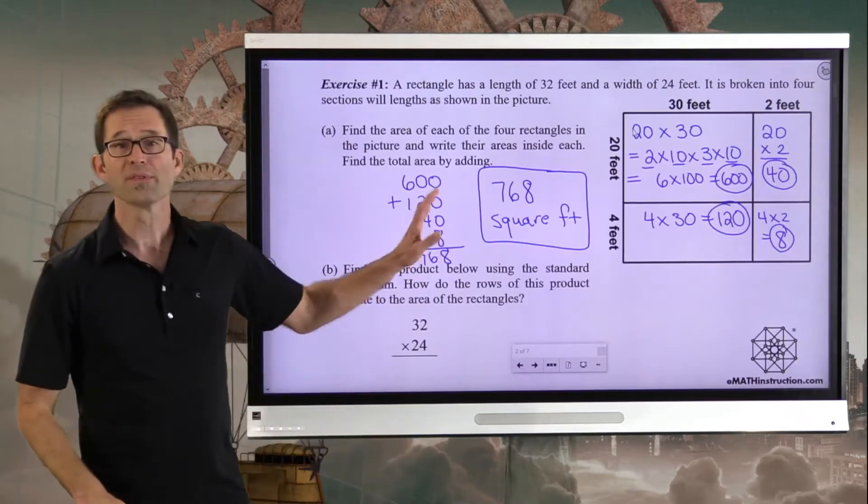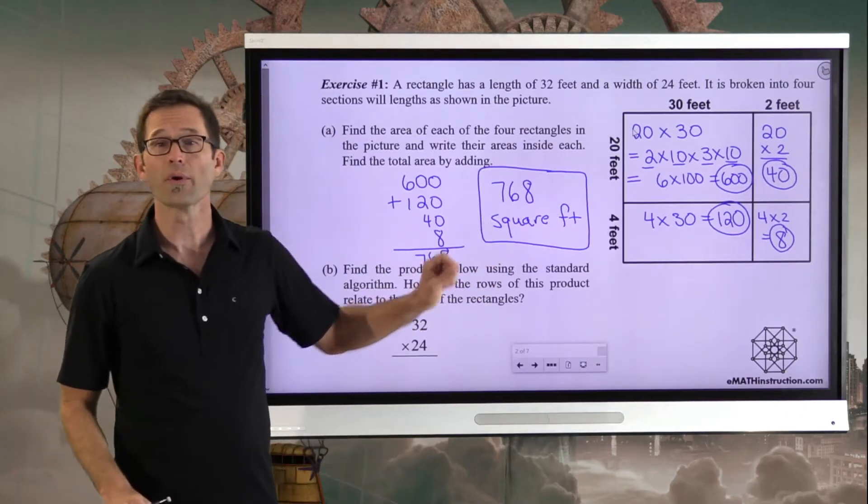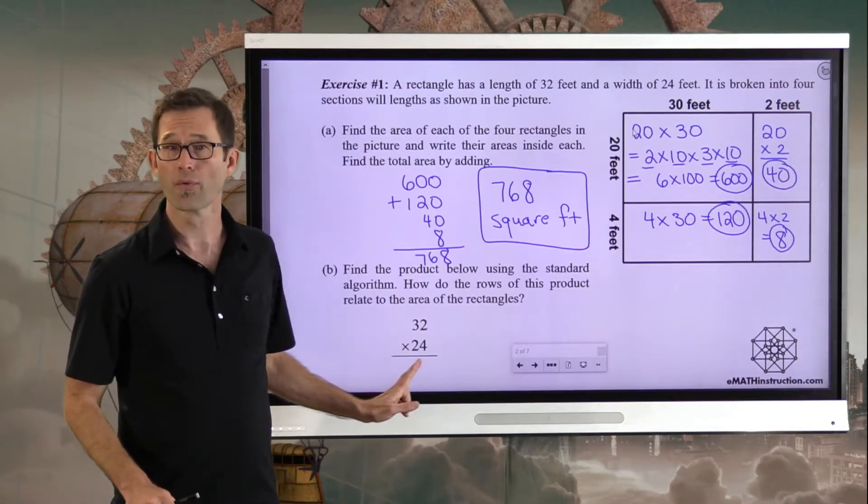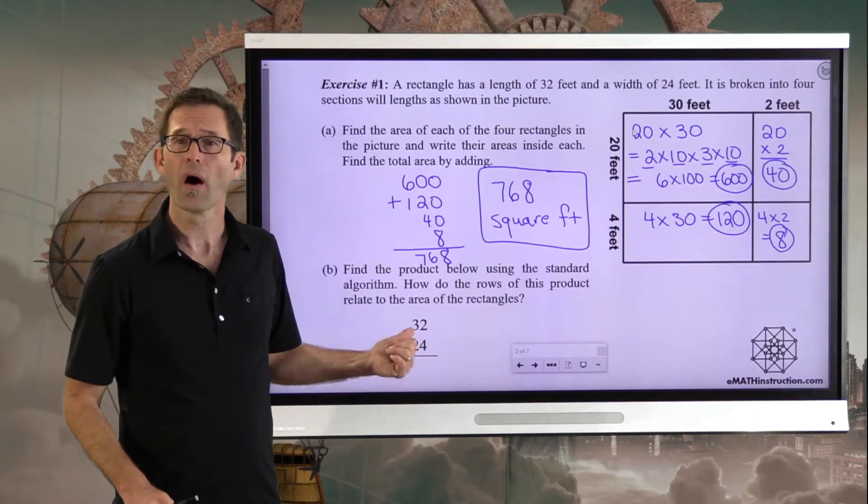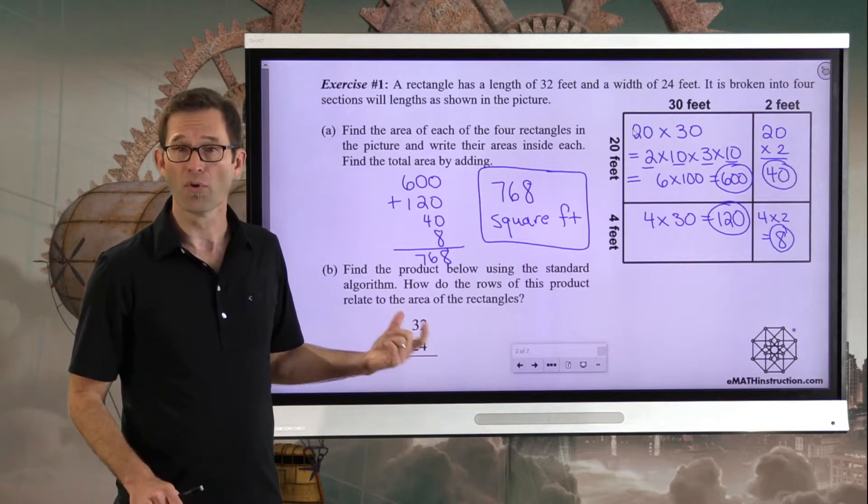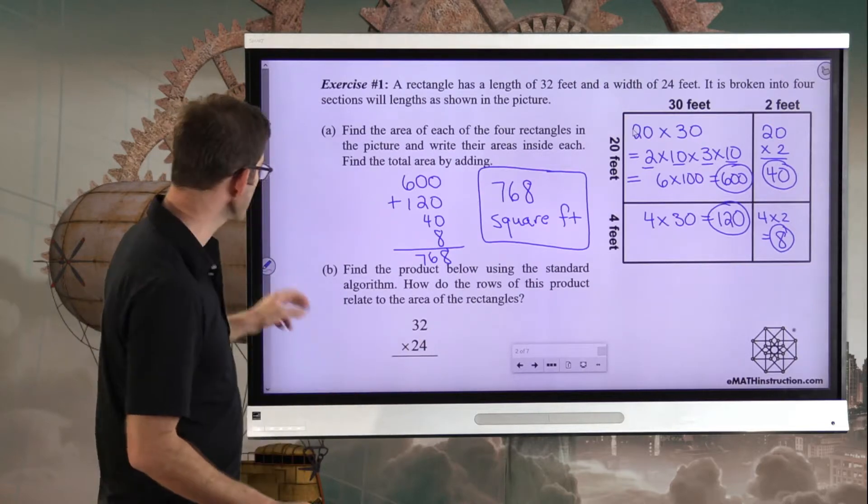What we now have is 600 plus 120 plus 40 plus 8. When we add them all together, we get 768 square feet. Now, the main purpose of that exercise is to help you understand the algorithm, and we're going to go through it right now, the algorithm on how to multiply multiple digit numbers.